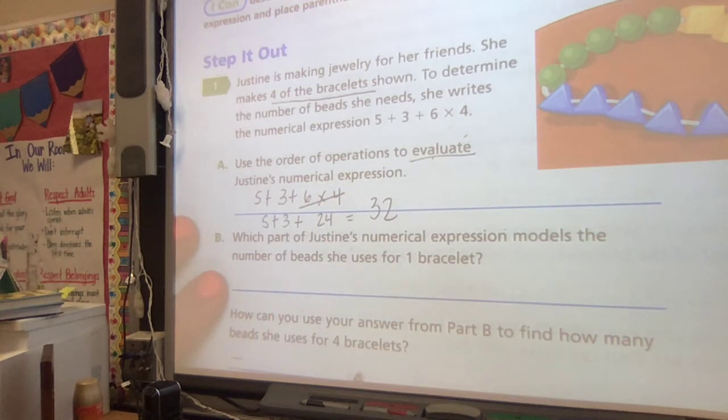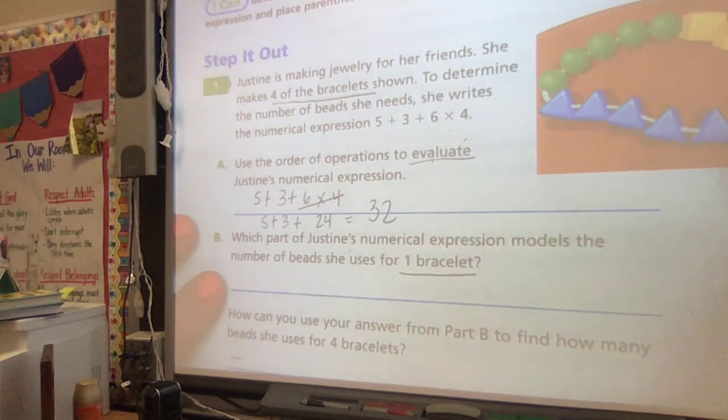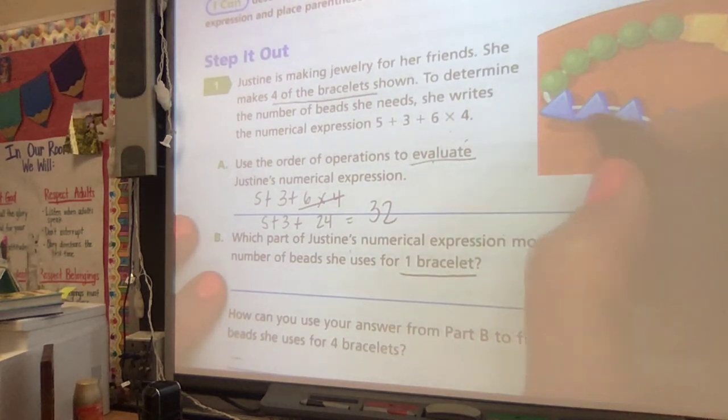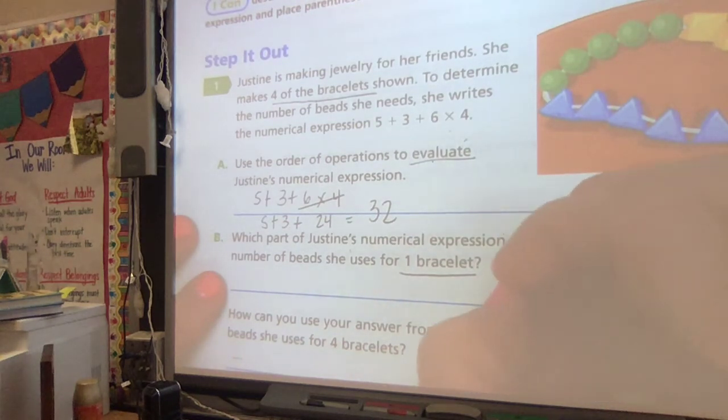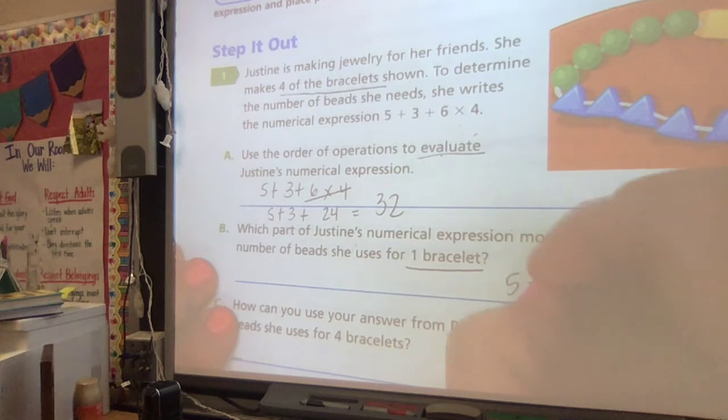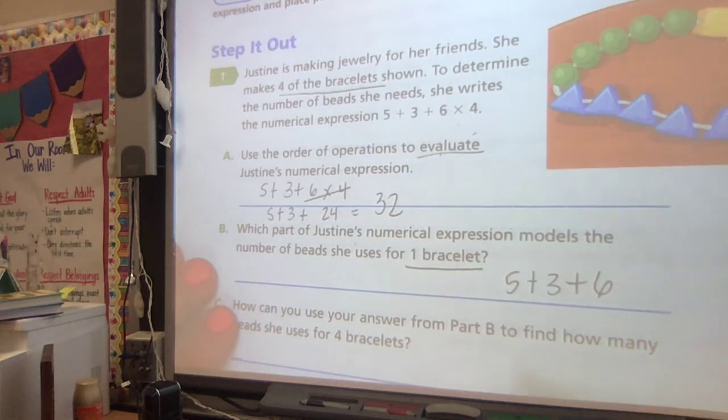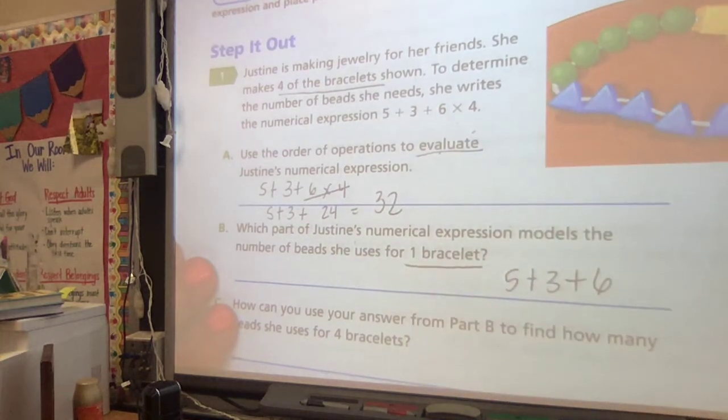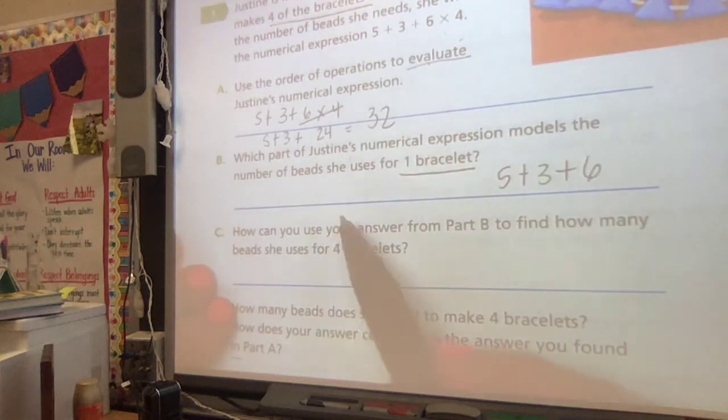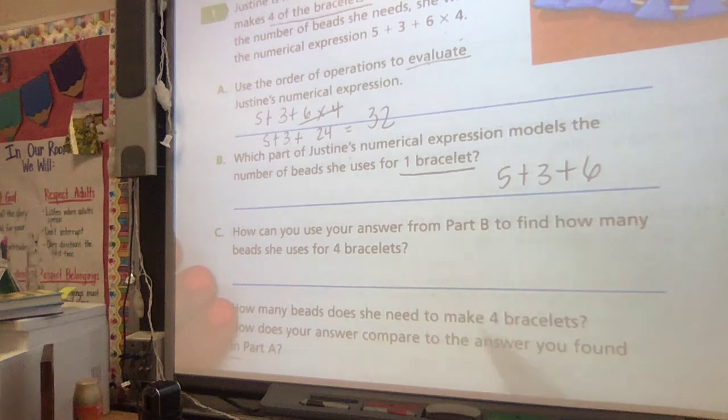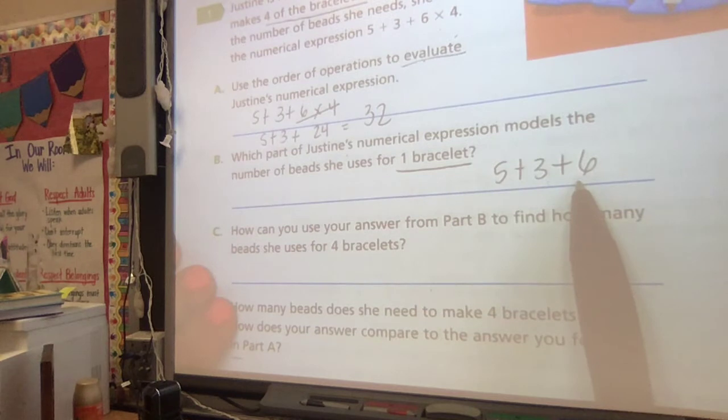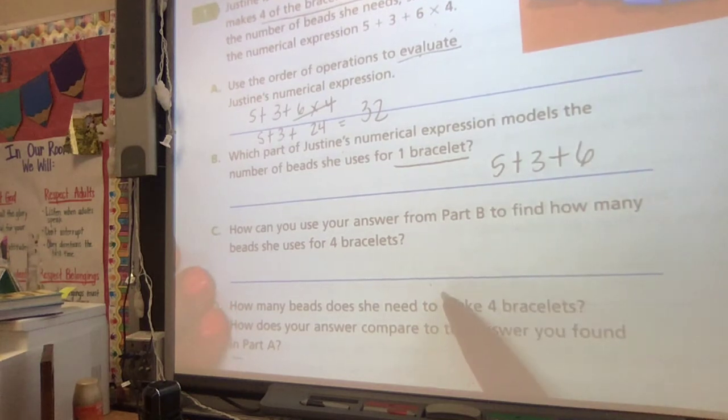Part B says, which part of her expression models the number of beads she uses for one bracelet? So I know she uses the 6, the 5, and the 3. So 5 plus 3 plus 6, that's what she used for one bracelet. I can see that in the picture. How can you use your answer from part B to find what she does for 4? If I can figure out what she does for one bracelet, I can figure out what she does for 4.